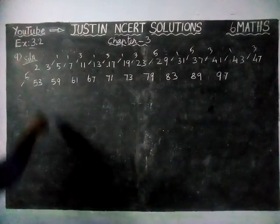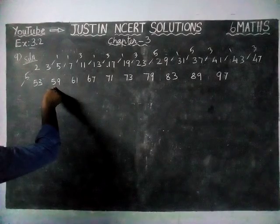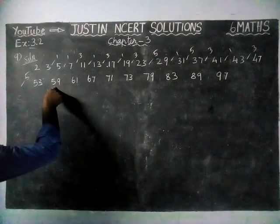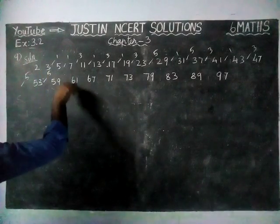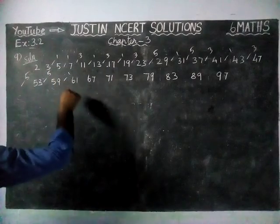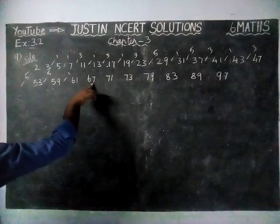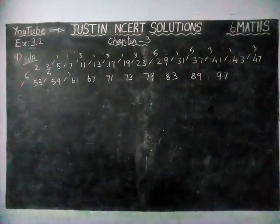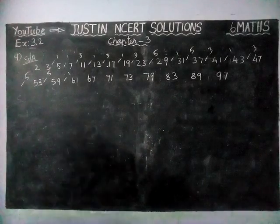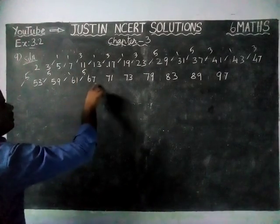And then 53 to 59: 54, 55, 56, 57, 58 — 5 numbers. Here only one number. 61 to 67: 62, 63, 64, 65, 66 — 5 numbers.